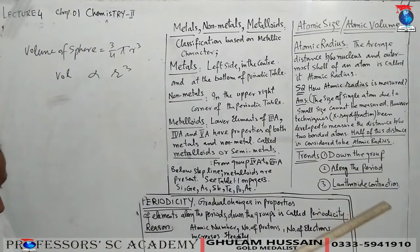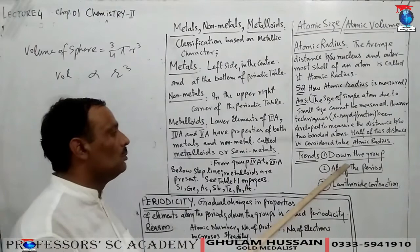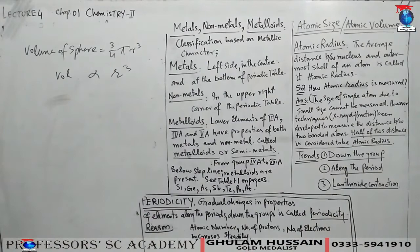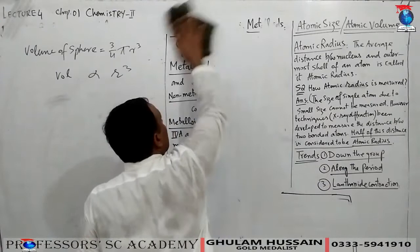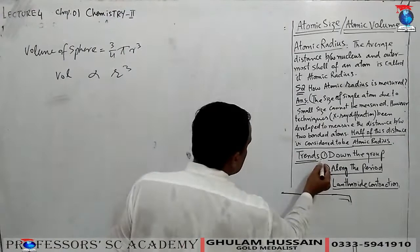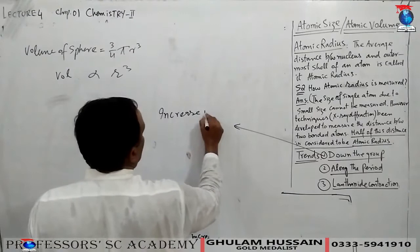We know that in the periodic table, atomic radius increases from top to bottom — that is, down within a group. Within a group, atomic radius increases. The reason, which we also studied in first year, is the increase in number of shells.